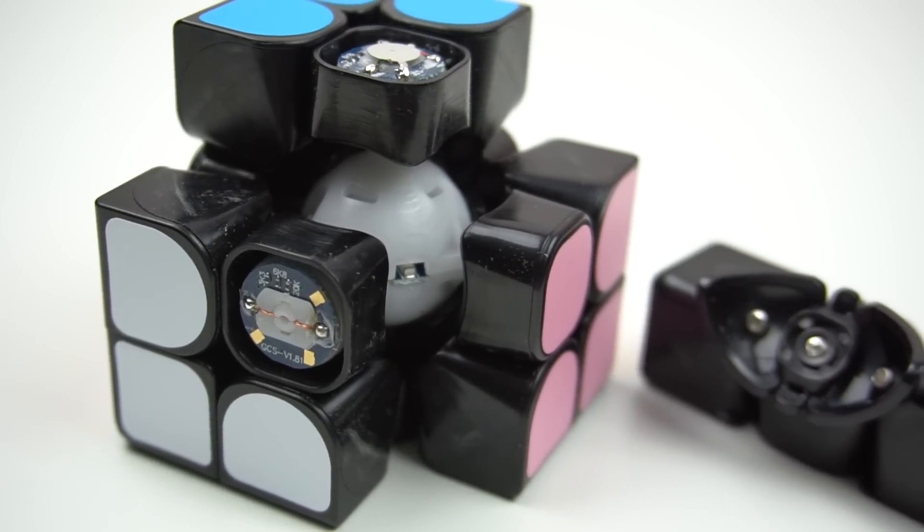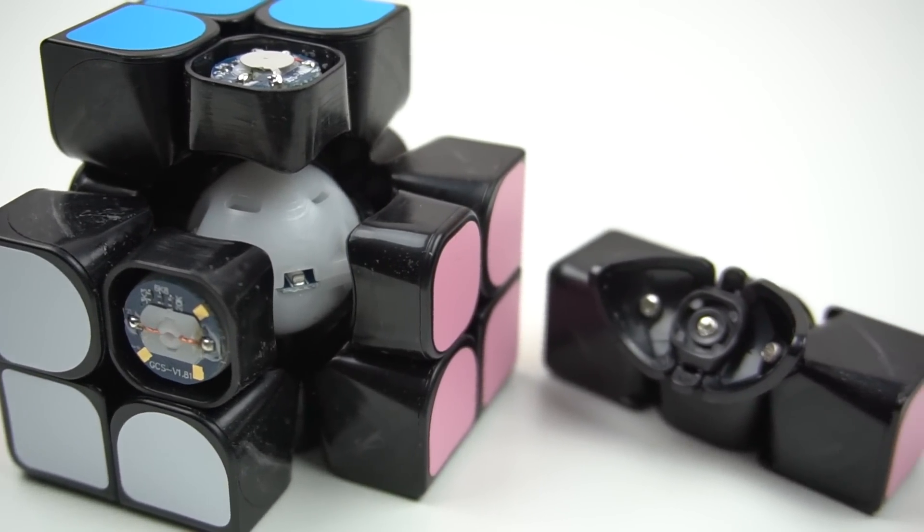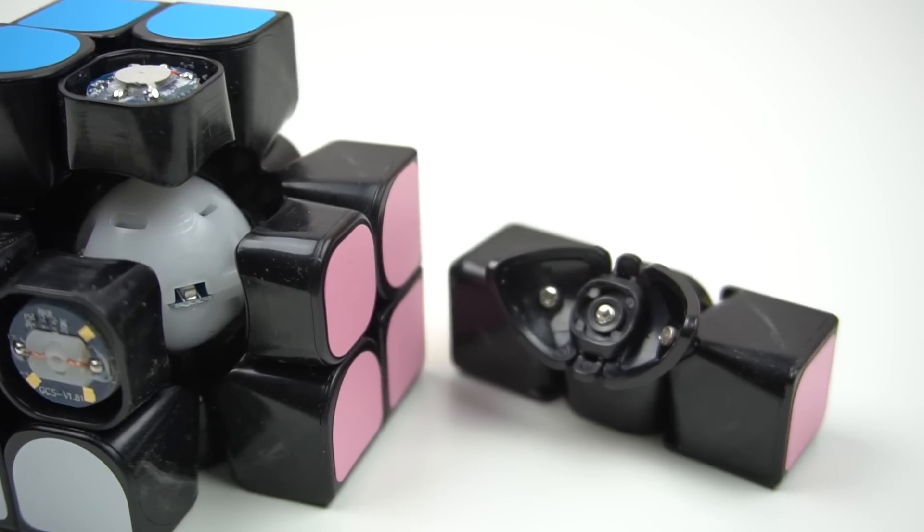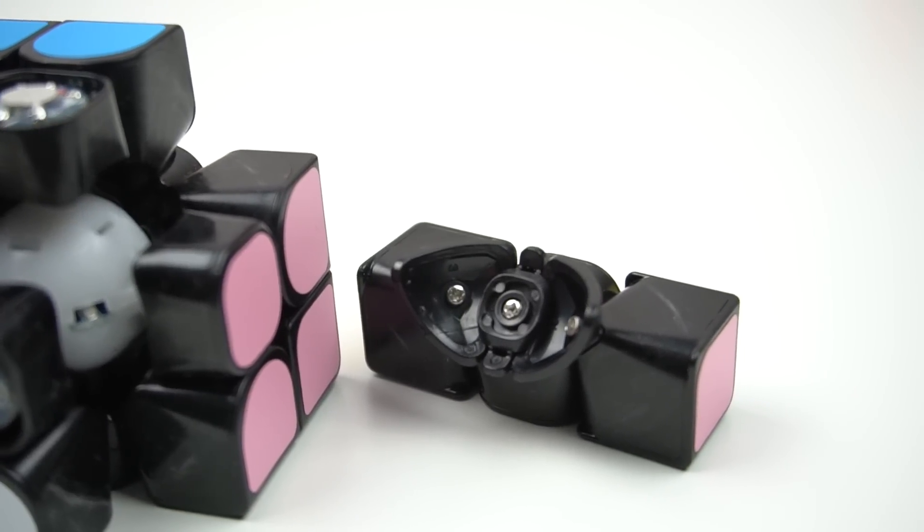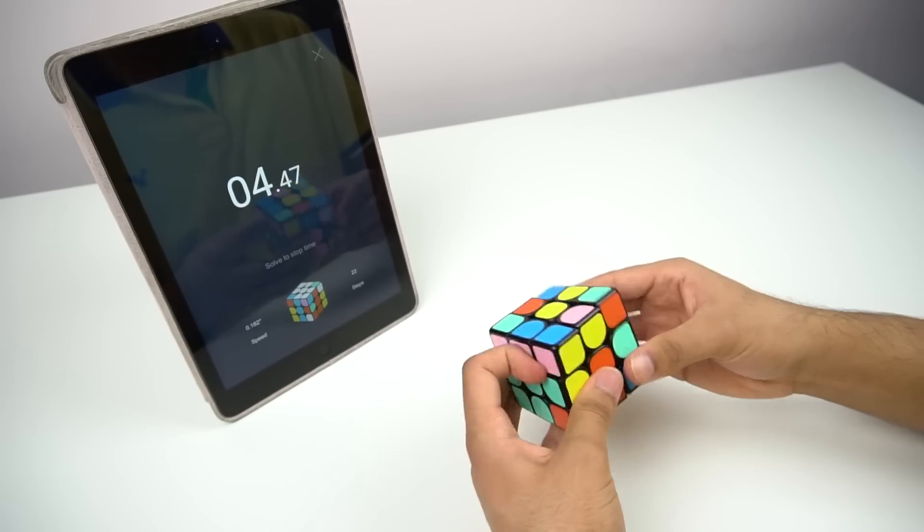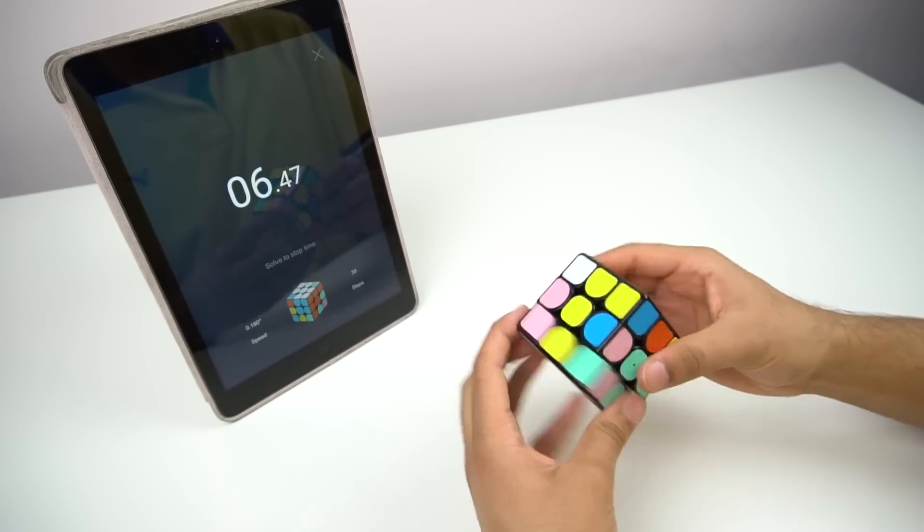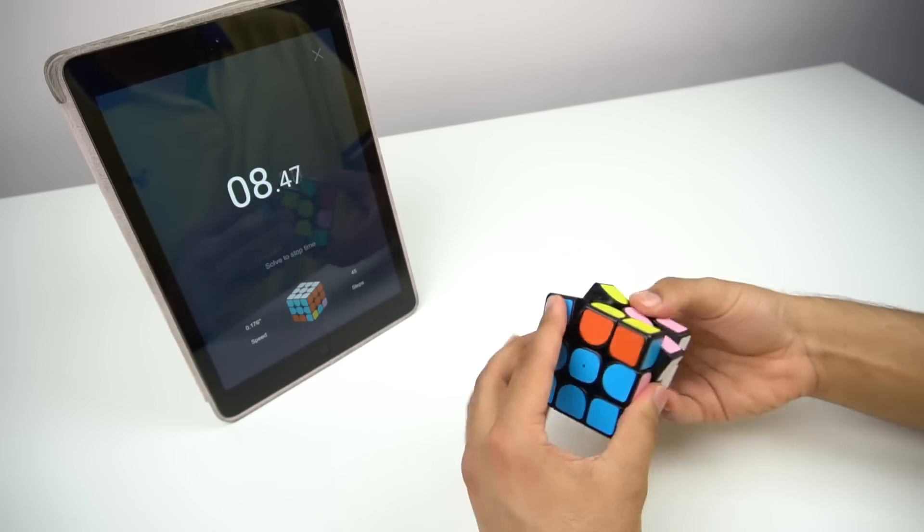The mechanism is another generic speed cube design, similar to the Valk and Gann cubes, but with its own unique grooves on the pieces. The cube's performance is pretty mediocre, similar to that of a budget cube, but without that cheap plastic feel.